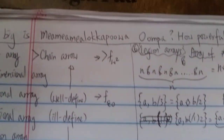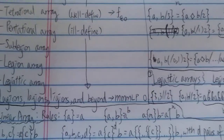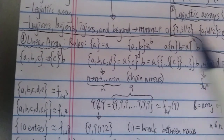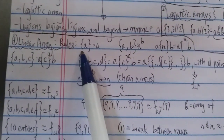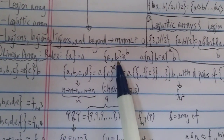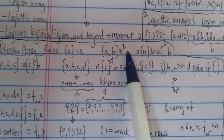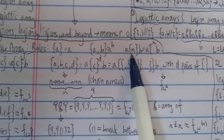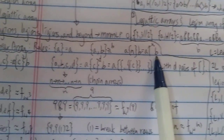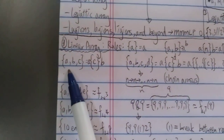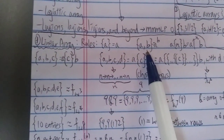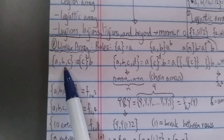So what is the linear array? Let's first look at BEAF. Linear array: {a} equals a, {a,b} equals a to the power of b, and then {a,n,b} is equal to a with n up-arrows b. Then {a,b,c} — this is one entry, two entry, and three entry.